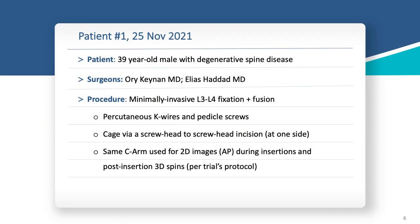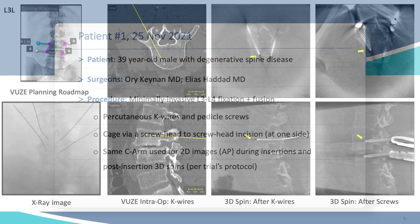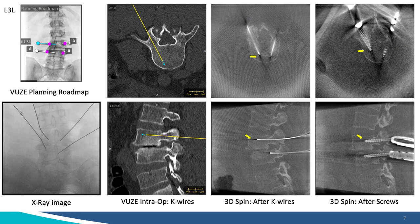So far we've done seven kyphoplasties and seven percutaneous screw insertions for a total of 44 screws. The distribution of pathologies is mostly trauma — 10 cases — and four for degenerative disorders. Our first patient was a 39-year-old male with degenerative spine disease scheduled for MIS L3-4 TLIF. The first image shows the pre-op plan superimposed, with the K-wire position in light blue compared to the plan. Below that is the real-time fluoroscopic image.